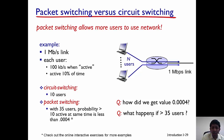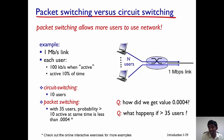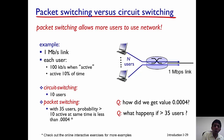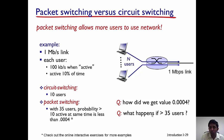On the other hand, with some math, you can see that with 35 users in a packet switch network, the chance that 10 users will be active at the same time — remembering each user is only active 10% of the time — is only 0.004, which is very low. So a lot more users can be supported simultaneously in a packet switch network.